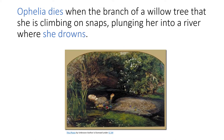For example: 'Ophelia dies when the branch of a willow tree that she is climbing on snaps, plunging her into a river where she drowns.' The first two words provide the subject and the verb, and the long prepositional phrase ends with a dramatic depiction of Ophelia's cause of death. This sentence has an emotional and informational impact that is diminished when rephrased with a weaker ending — for instance, ending with 'into a river' buries the climactic word. These weaker versions are less effective because they don't move toward a climactic final word, depriving them of a sense of momentum and finality.